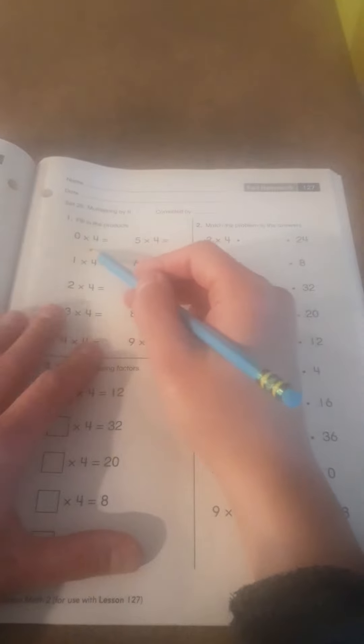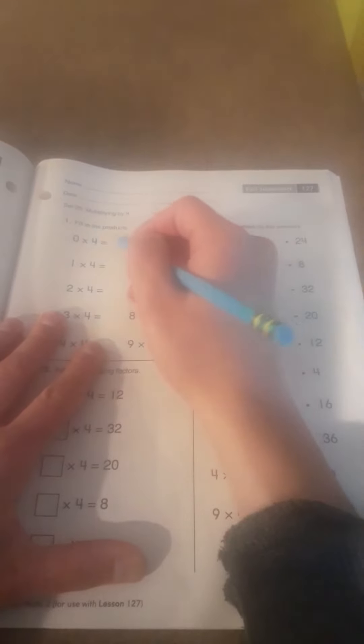0 times 4 is 0. 1 times 4 is 4. 2 times 4 is 8. 3 times 4 is 12. 4 times 4 is 16. 5 times 4 is 20.